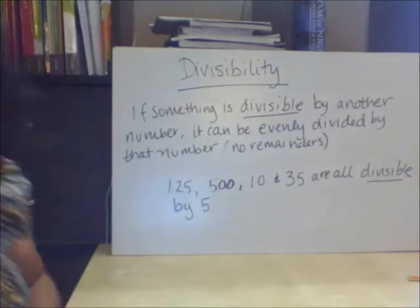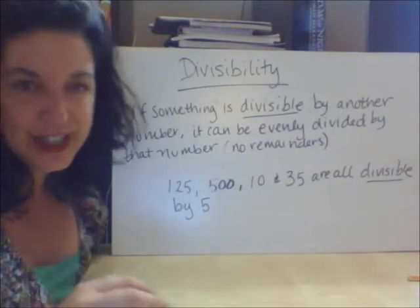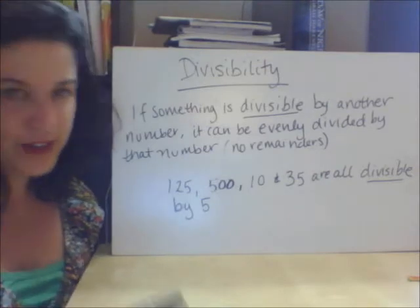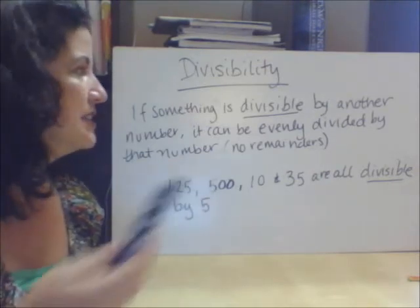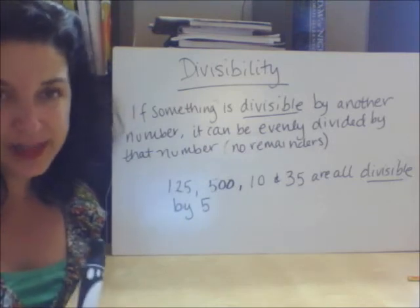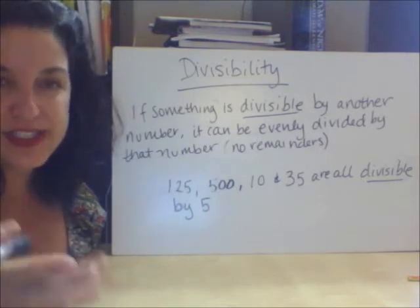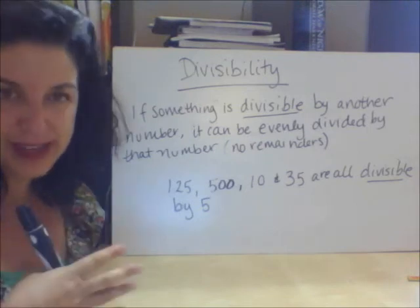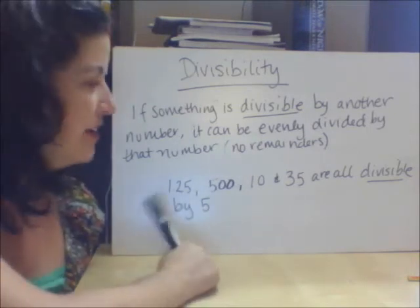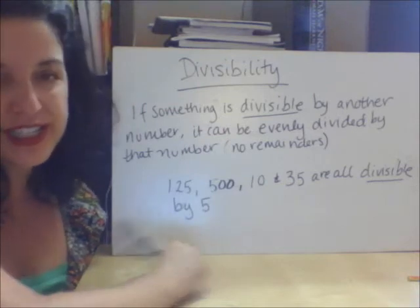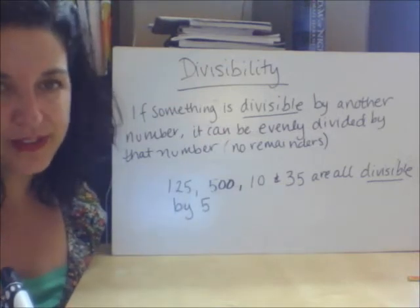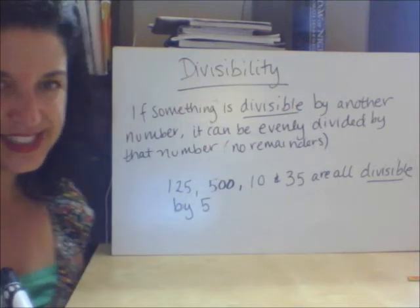Divisibility is another word that you're going to hear in this chapter. It means a very similar thing to a factor — it just means that something is divisible by another number. Divisible sounds like divide because that's what we're talking about: you can divide another number by that number evenly. So for example, 125, 500, 10, and 35 are all divisible by the number 5. That's divisible.